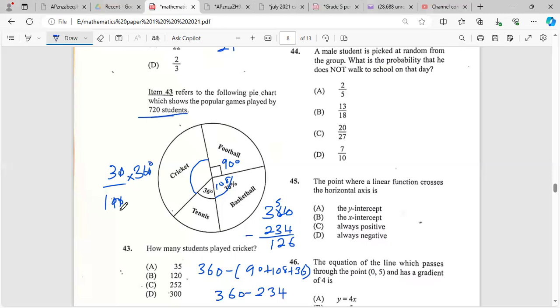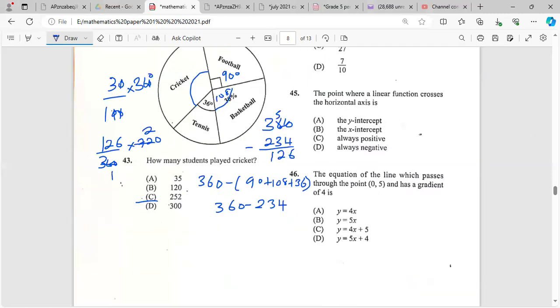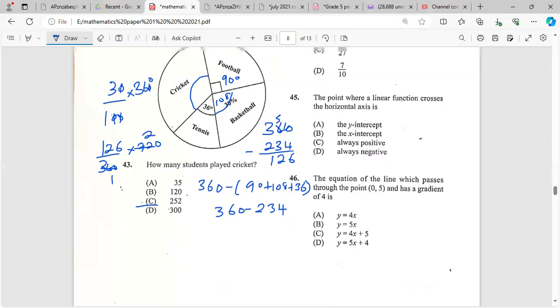But remember the total is 720 students. So it would be 126 over 360 times 720. You can see this simplifies. Two times 126 is 252. So the number of persons who played cricket would be 252.